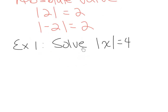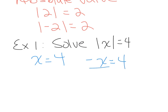Example 1 asks us to solve the absolute value of x equals 4. What number can I put inside the bars that has an absolute value of 4? There are actually two options. To set up equations, you first take whatever's inside — that would be x — and make it equal to whatever's on the other side: x equals 4. Then you take the negative of what's inside: negative x equals 4, which gives x equals negative 4. A shortcut is to set x equal to positive 4 and x equal to negative 4 directly, skipping the division step.